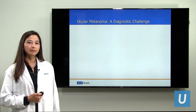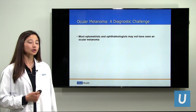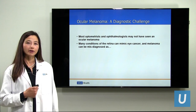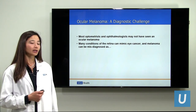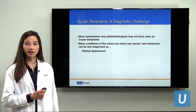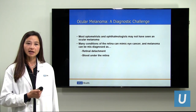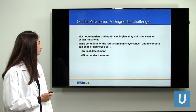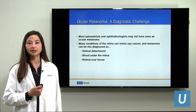Why may ocular melanoma be a diagnostic challenge? Because ocular melanoma is so rare, most ophthalmologists and optometrists have not seen one before. In addition, many benign conditions can mimic an eye cancer, so there can be a misdiagnosis. For example, retinal detachment can sometimes be associated with an intraocular tumor and must be evaluated carefully. Blood underneath the retina — a hemorrhage — can mimic a melanoma, but melanomas can also present as an area of blood when it is actually a tumor. Scar tissue can also really be a melanoma if one is not careful.